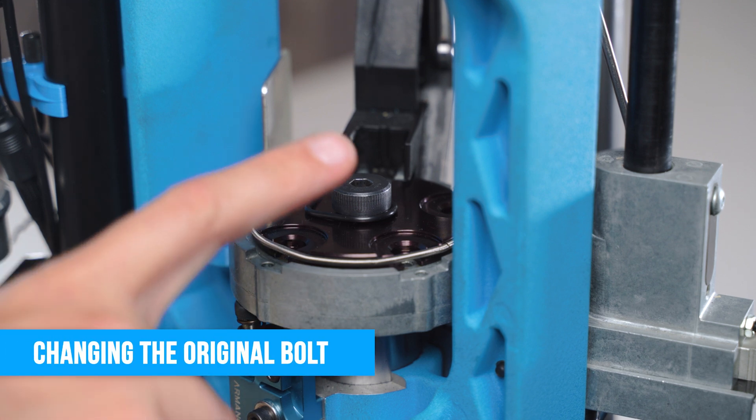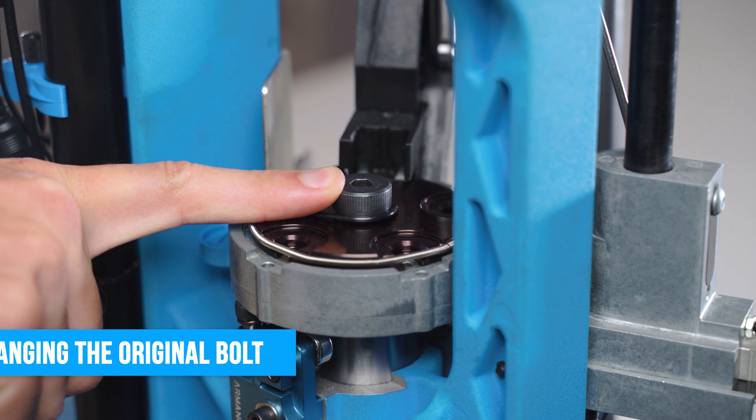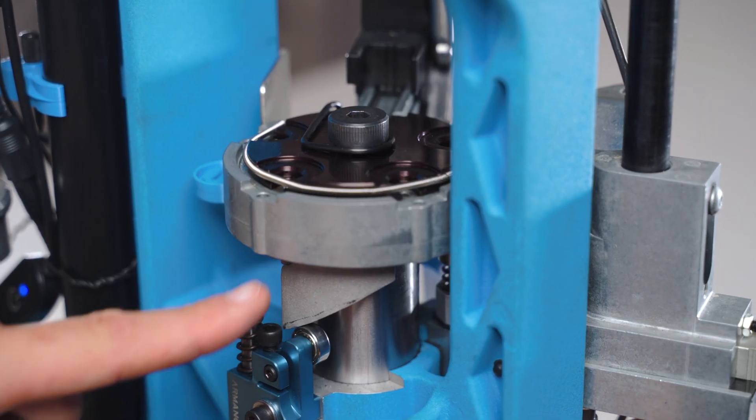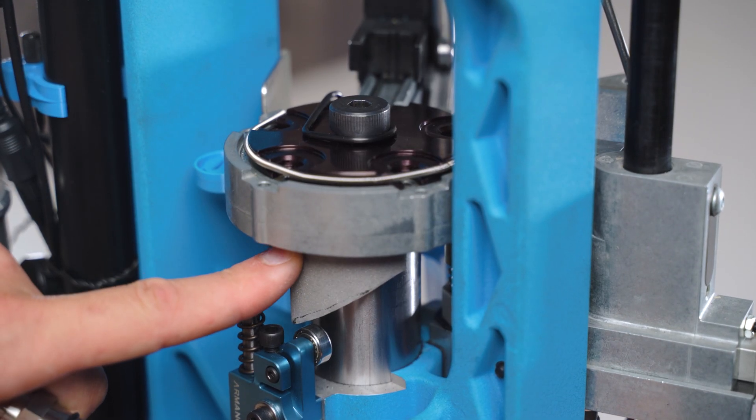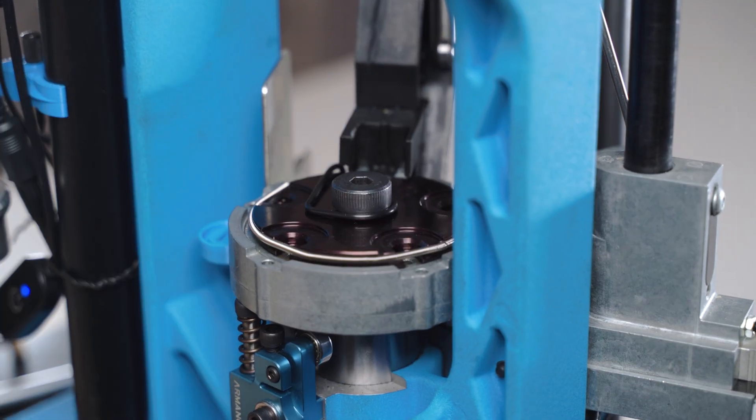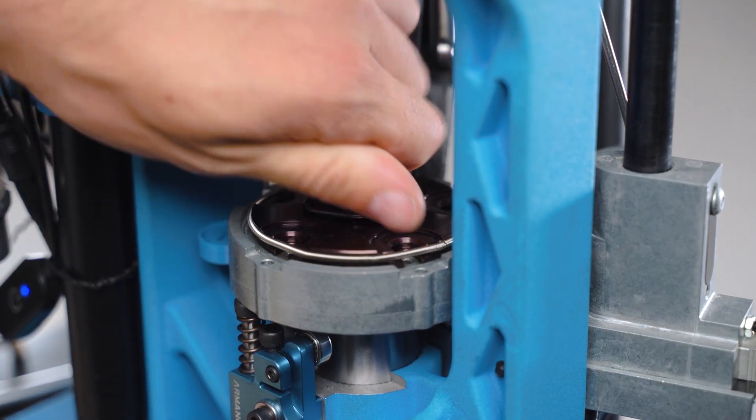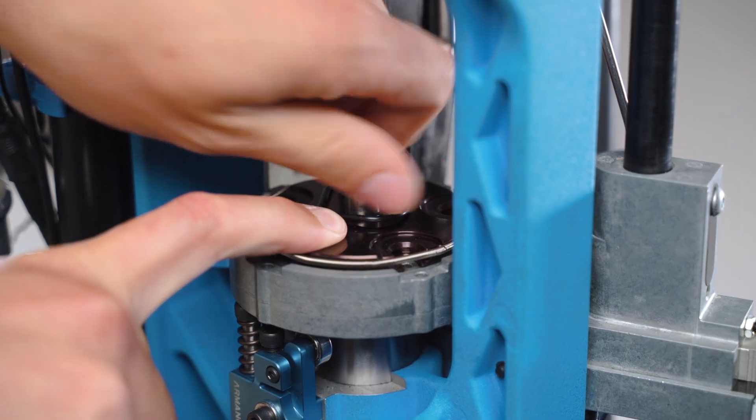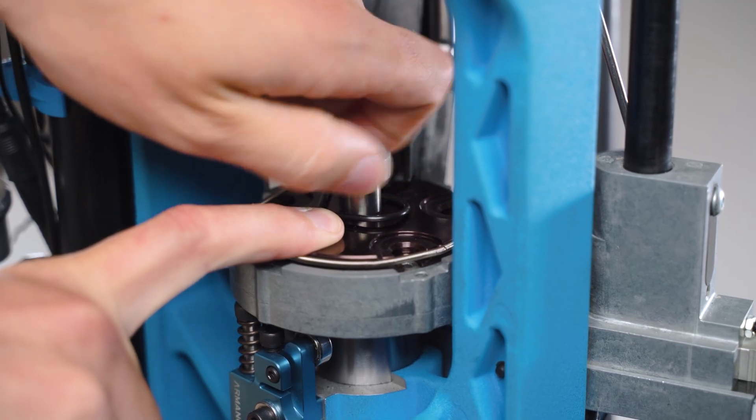First I would recommend you start with removing the original shell plate bolt. To do that you need to loosen the retaining screw here and then unscrew the bolt. I have already prepared this so my bolt is loose and now I can simply unscrew it.